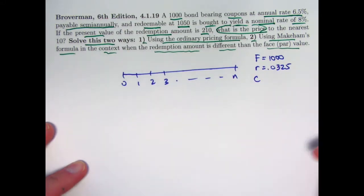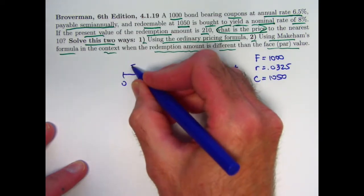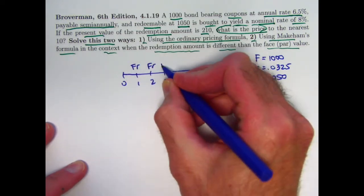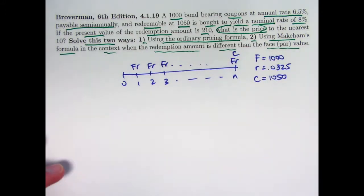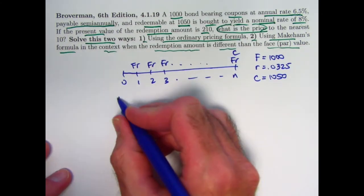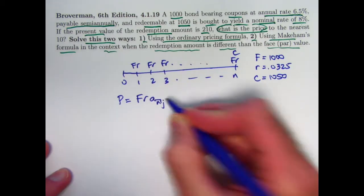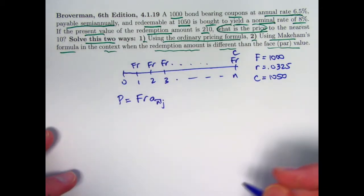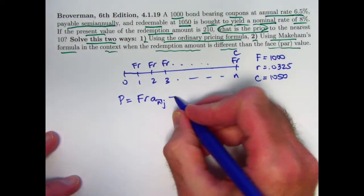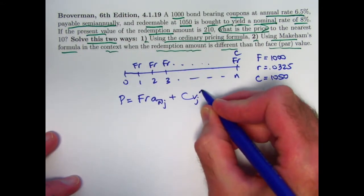The redemption amount, C, is different than the face value. This time it's 1,050. In general, the coupon amounts are F times R. And then we have the redemption amount C. The price at time 0 is the present value of all these things. P is F times R times A-N-J, where J is the effective semi-annual yield rate, 4%. And then we take the redemption value and discount that back to time 0.